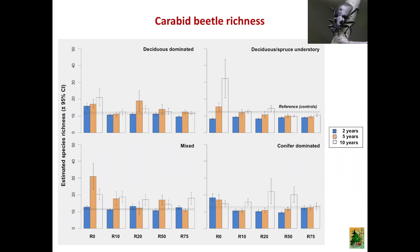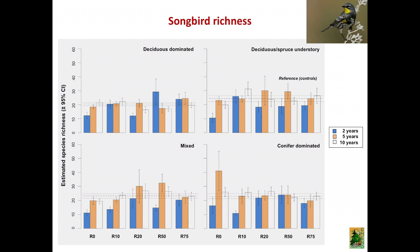For carabid beetles, the story is a little different. Regardless of cover type and treatment, richness has recovered over time. However, in most cases the bars go way above the reference controls, showing that these sites are being colonized by open habitat species — increasing the local species pool through a mixture of open habitat colonizers and species that remained after harvesting.